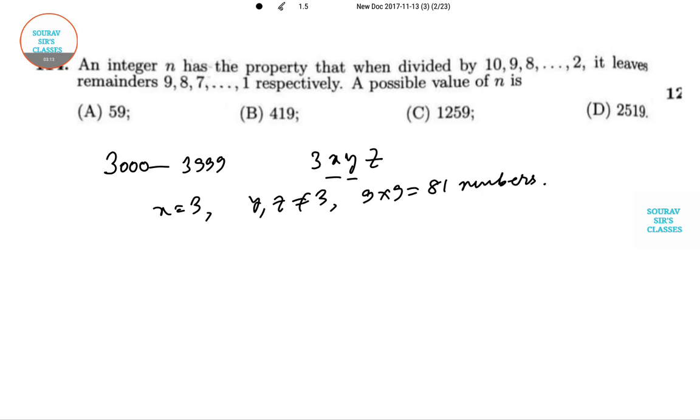Similarly for Y equals 3, and X and Z not equal to 3, we have another 81. So in that way, 81 times 2 in these two cases is 162.